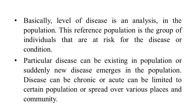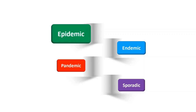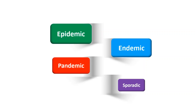So basically, the level of disease is an analysis in the population. This reference population is the group of individuals that are at risk for the disease or condition. A particular disease can exist in a population or suddenly emerge as a new disease. Disease can be chronic or acute, limited to a certain population, or spread over various places and communities. On the basis of that, disease can be epidemic, endemic, pandemic, or sporadic.